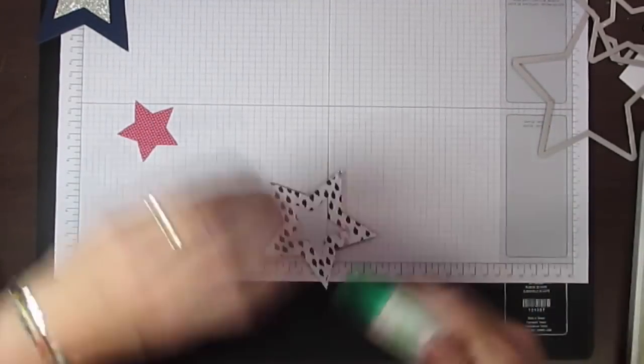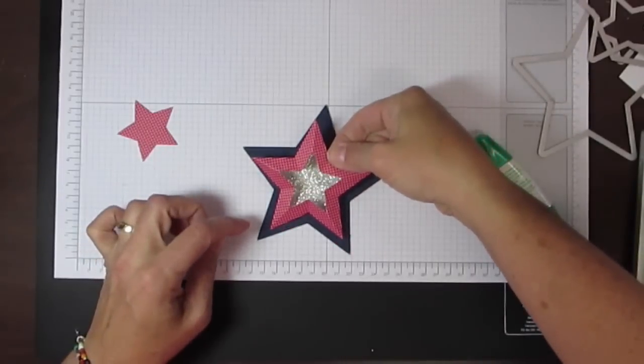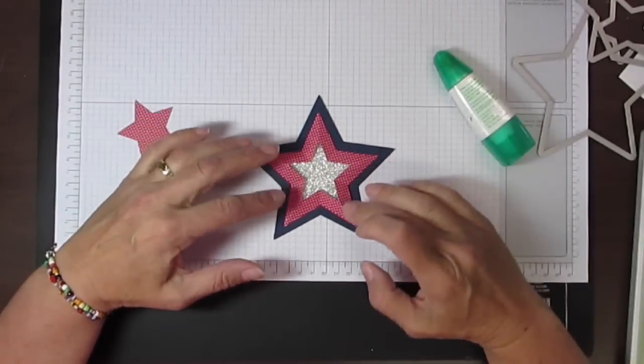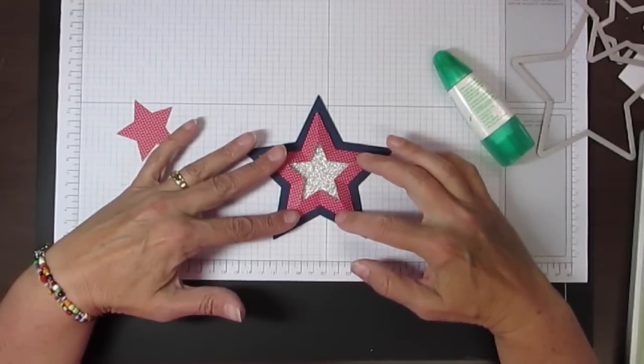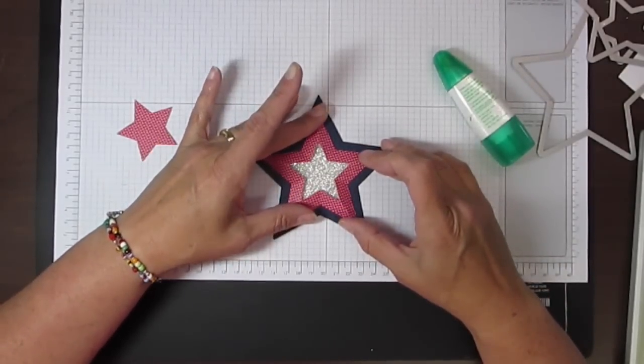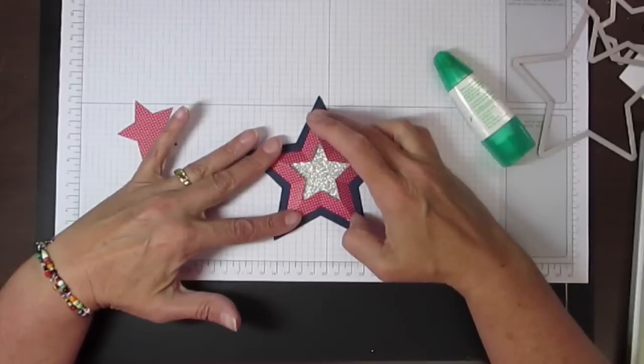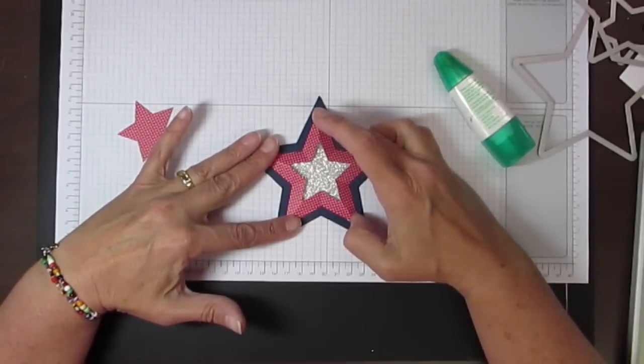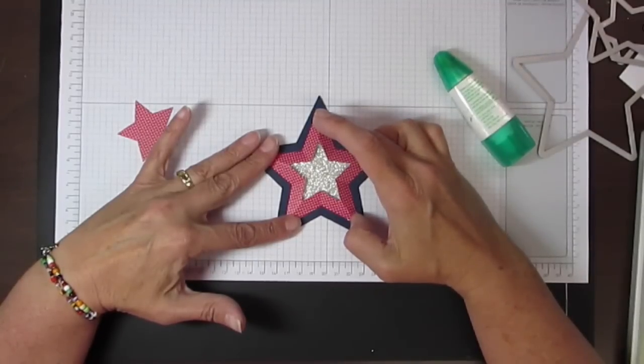Then bring my card base back in and line this up. The nice thing about the multi-purpose adhesive is that it's a little forgiving, so you can kind of manipulate things a little bit. Once I've got it where I want it, I'm just going to hold those tips down for maybe 30 seconds or so, and that will adhere it to your card.